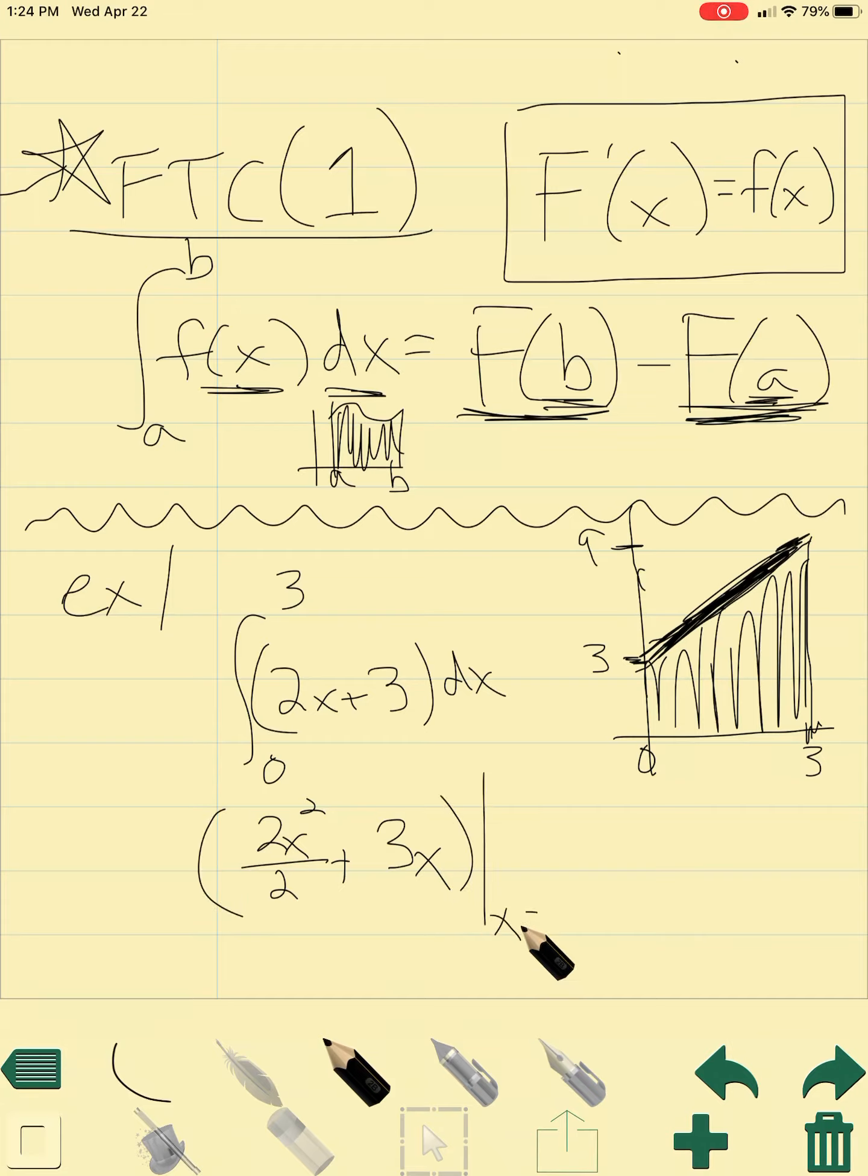Which would be 2x squared over 2 plus 3x over 1, from 0 to 3. So you want to think about it in terms of f of 3 minus f of 0, where if we plug 3 into this function, you get 9 plus 9, which is equal to 18. If you plug in 0, you get 0, so your answer should just be 18.